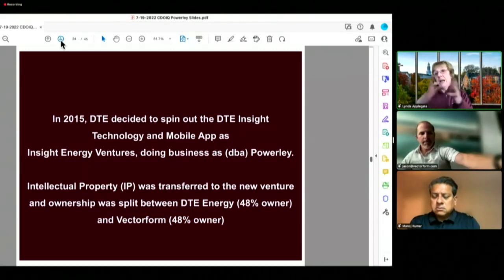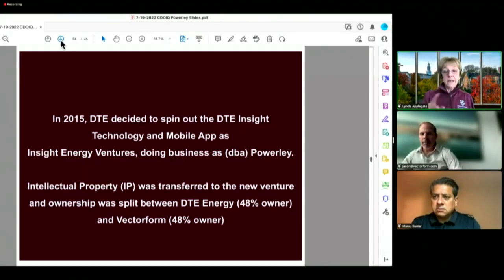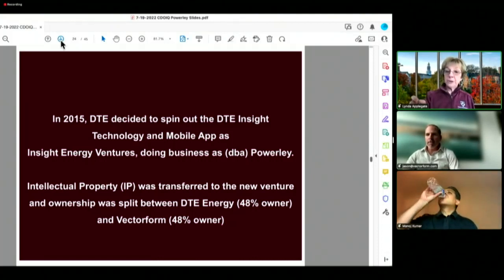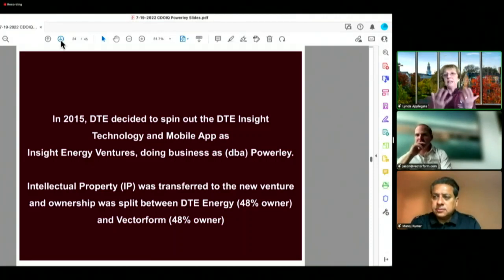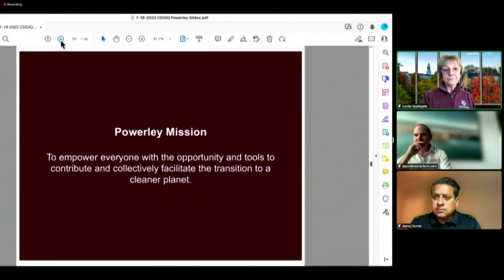Insight Energy Ventures could be a new kind of innovation company. Powerly was its first subsidiary underneath it that would be able to take the DTE Insight technology and mobile app that they built inside DTE and start spinning it out. Intellectual property was transferred to the new venture and ownership was split between DTE Energy, which was a 48% owner, and Vectorform, which also was a 48% owner. And the rest would be for bringing in the talent.